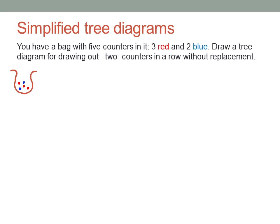Suppose you have a bag with five counters in it, three red ones and two blue ones. You're going to draw out two counters in a row without replacement.